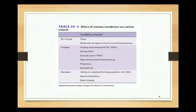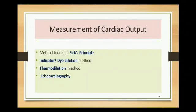Variations in cardiac output: during sleep or moderate changes in environmental temperature there is no change in cardiac output. Cardiac output increases with anxiety, excitement, eating, exercise, high environmental temperature, pregnancy, and epinephrine. It decreases when moving from lying to sitting or standing, with rapid arrhythmias, or any heart disease. Methods to measure cardiac output include: the Fick principle, indicator dilution technique, thermodilution technique, and echocardiography - nowadays echocardiography is preferred as it is non-invasive.